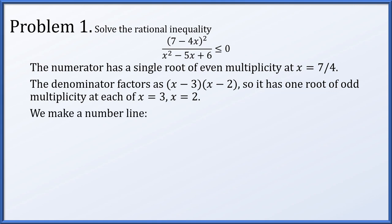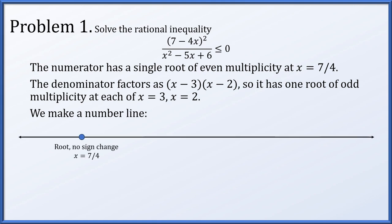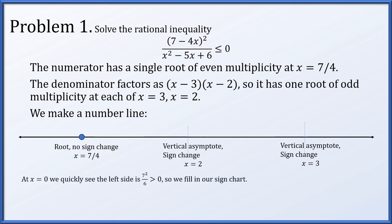Now that we have fully factored the numerator and denominator, we can make a number line. We mark a root at x equals 7/4; since it was of even multiplicity, there will not be a sign change in the rational function there. At x equals 2 and x equals 3 there are vertical asymptotes, and because they were of odd multiplicity there will be a sign change at each.